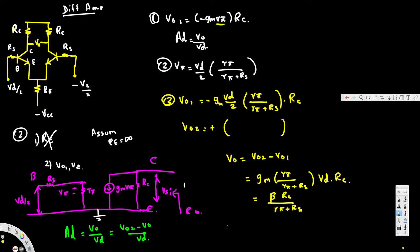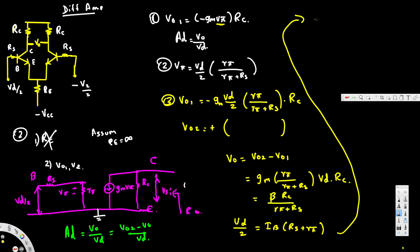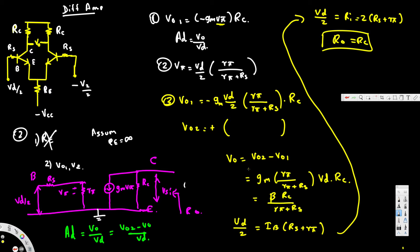From this circuit, Vd/2 equals Ib times (Rs + r5). Rearranging, the input resistance Ri equals 2 times (Rs + r5), and the output resistance Ro is equal to Rc.